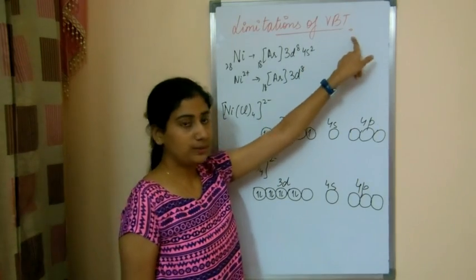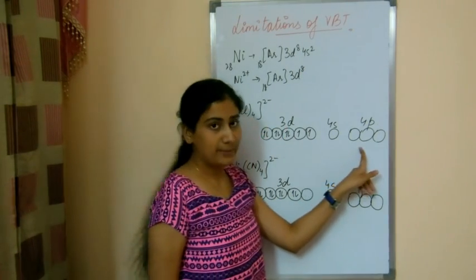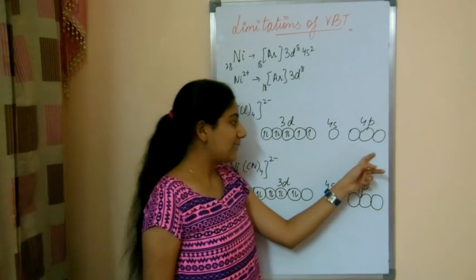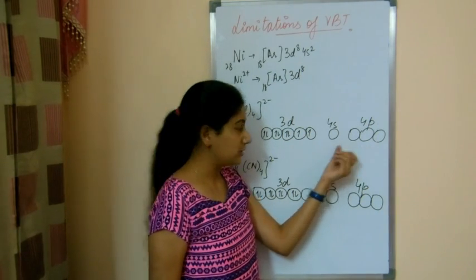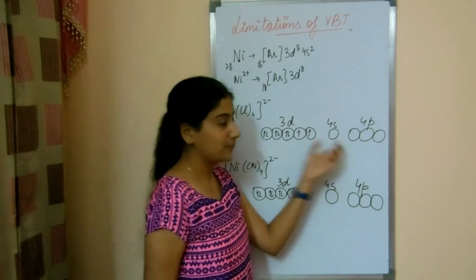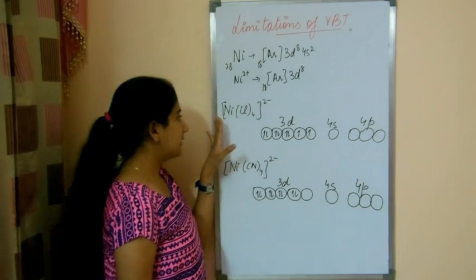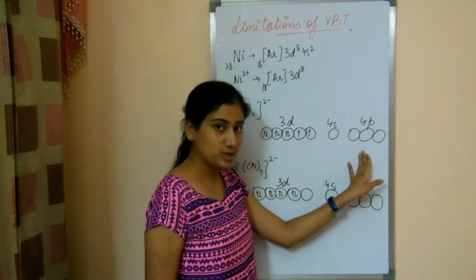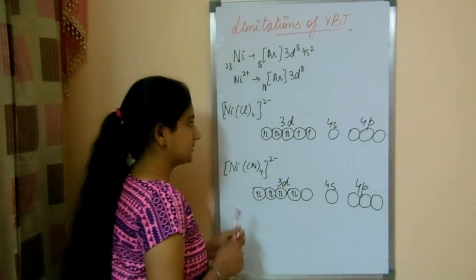According to valence bond theory, the metal atom provides empty orbitals and the fully filled orbitals of the ligand overlap with them after hybridization. So that means this happens, and it is seen that in this complex sp3 hybridization is seen and tetrahedral structure is present.